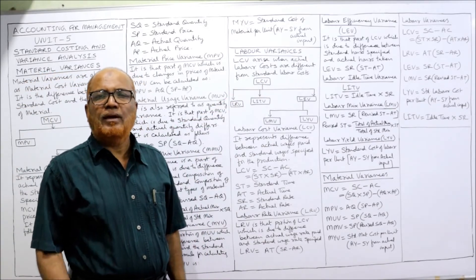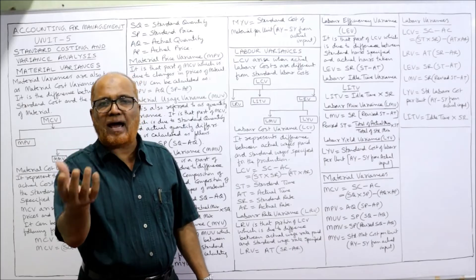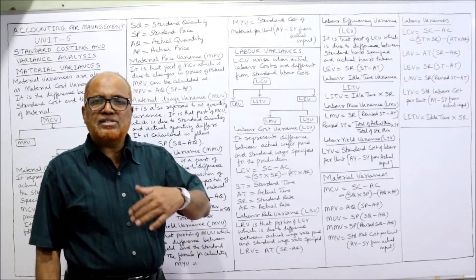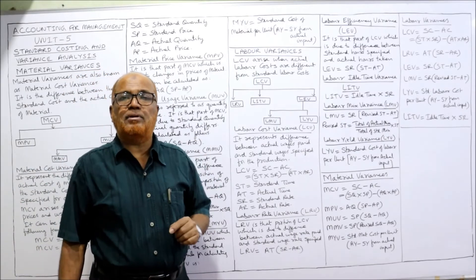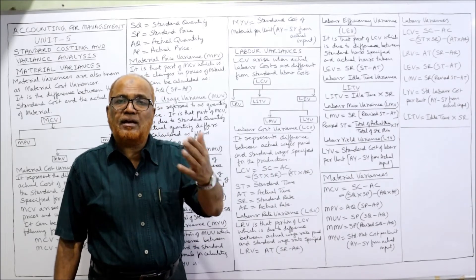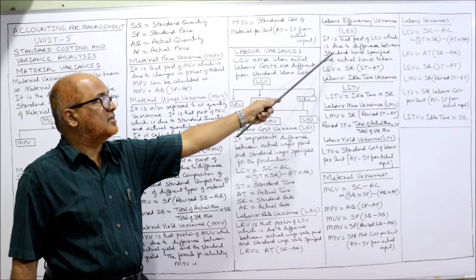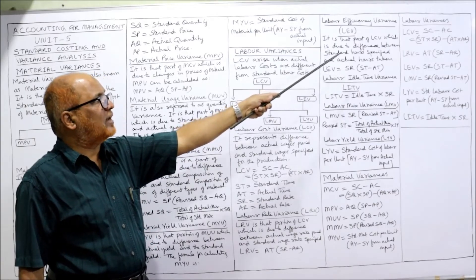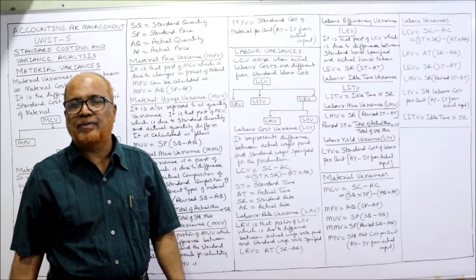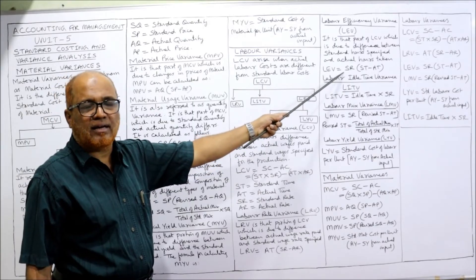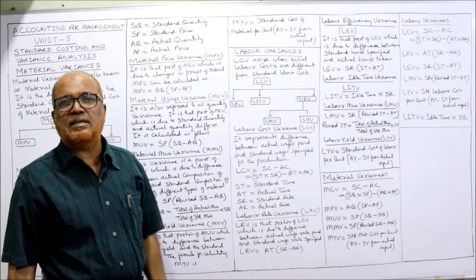Labor efficiency variance, LEV. This arises when standard time and actual time are different — for example, if we estimated 1000 hours but actually took 1200 hours. It is that part of LCV due to the difference between standard hours specified and actual hours taken. Formula: LEV = SR × (ST − AT). Standard rate multiplied by standard time minus actual time.